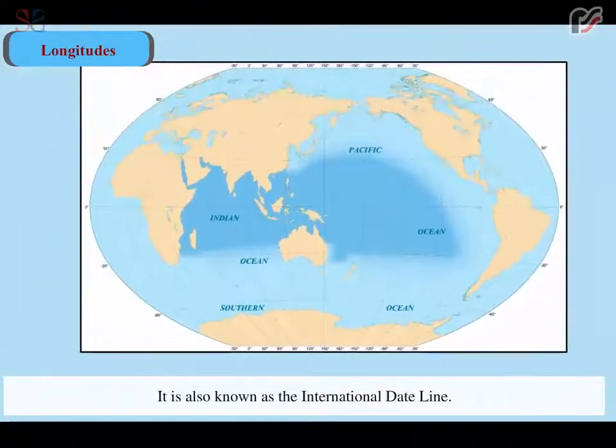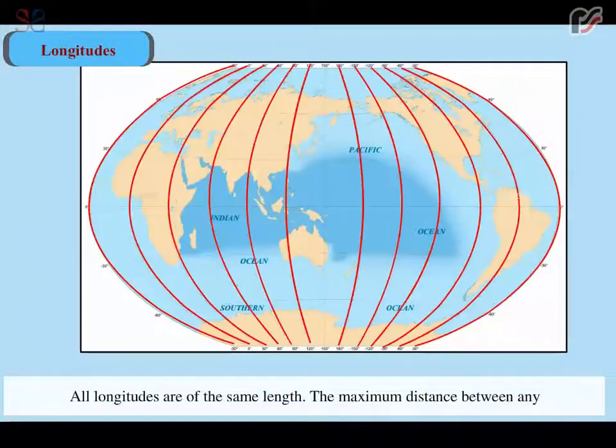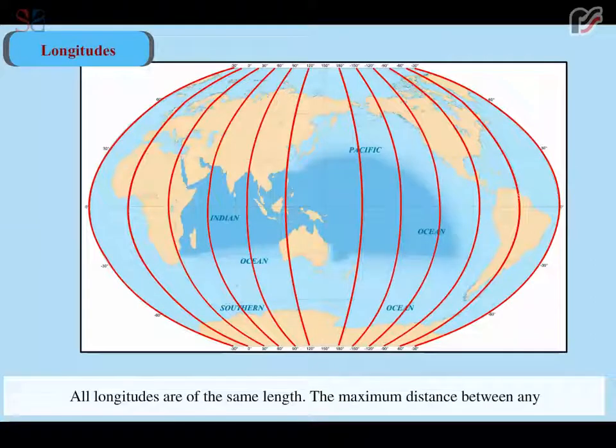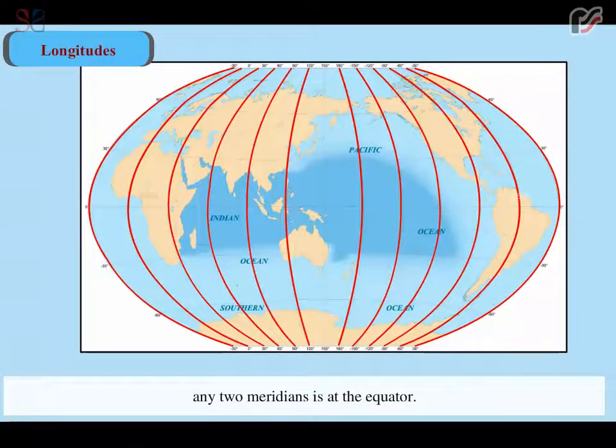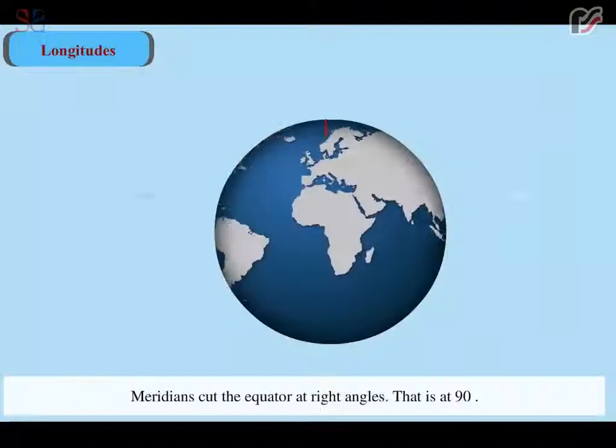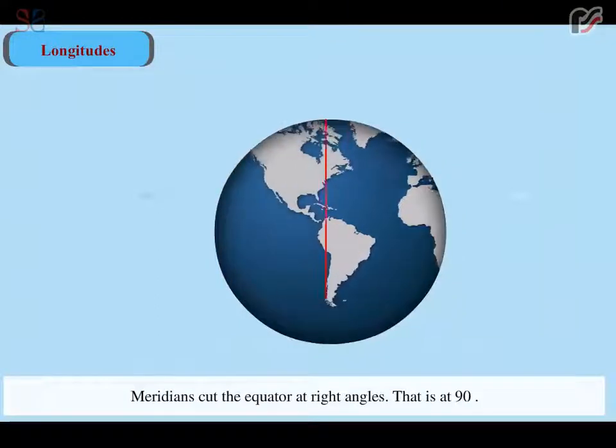It is also known as the international date line. All longitudes are of the same length. The maximum distance between any two meridians is at the equator. Meridians cut the equator at right angles.